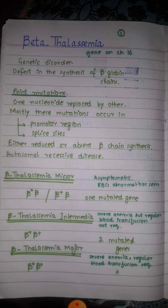In beta thalassemia minor, if we perform a blood smear, red blood cells will be hypochromic and microcytic. In beta thalassemia intermedia, both genes are mutated — from the maternal as well as paternal chromosome. The person will be beta-plus/beta-plus, meaning some beta globin chains are formed but in reduced numbers. Such a person will suffer from severe anemia, but regular blood transfusions are not required.